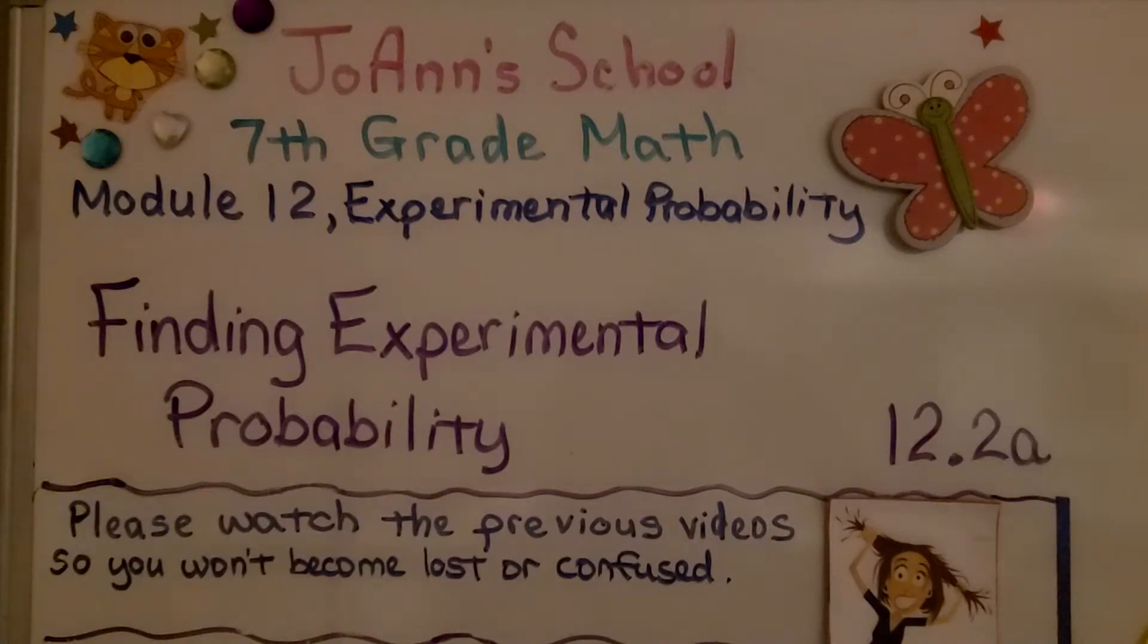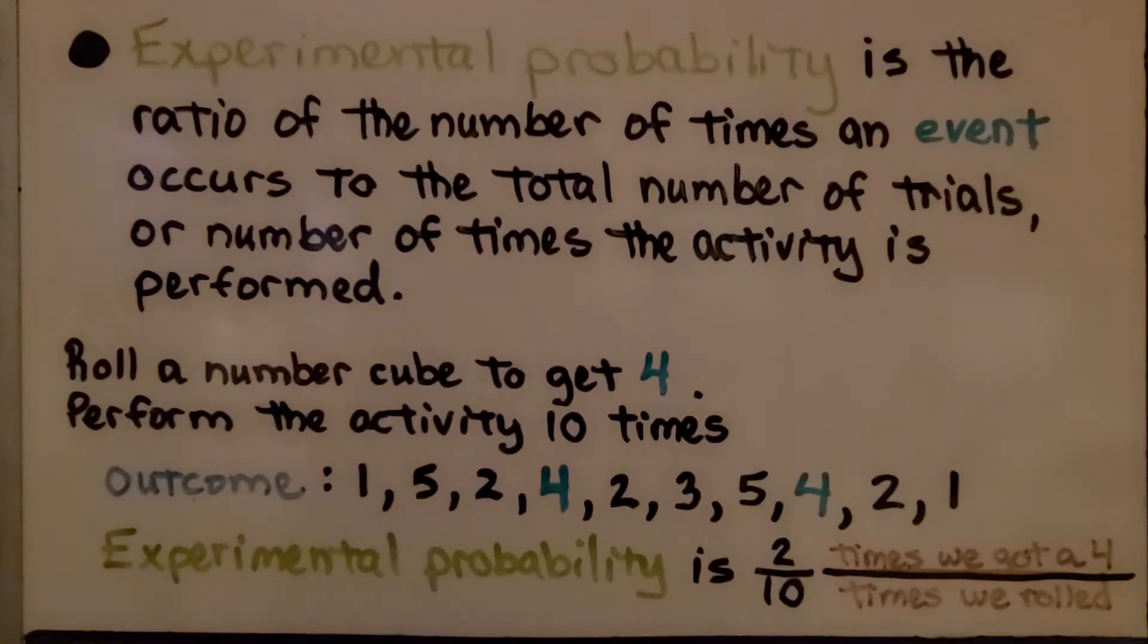Lesson 12.2a, Finding Experimental Probability. Experimental probability is the ratio of the number of times an event occurs to the total number of trials, or number of times the activity is performed.